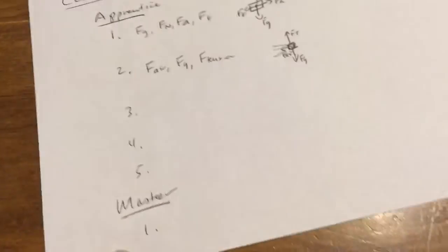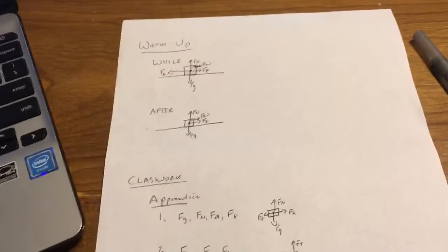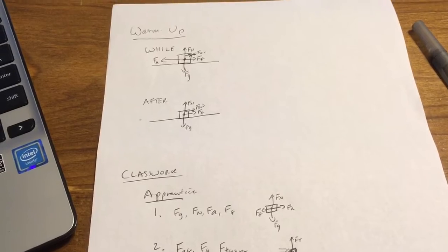All right, you're gonna do these for each one now. You'll have five for apprentice, five for master, flip it over, ten for wizard, and then do the homework and that's it. Have a good day and hopefully I'll see you tomorrow.